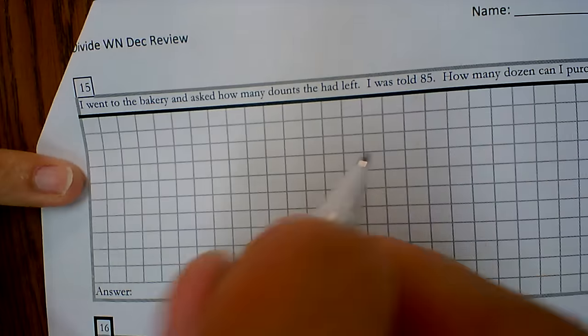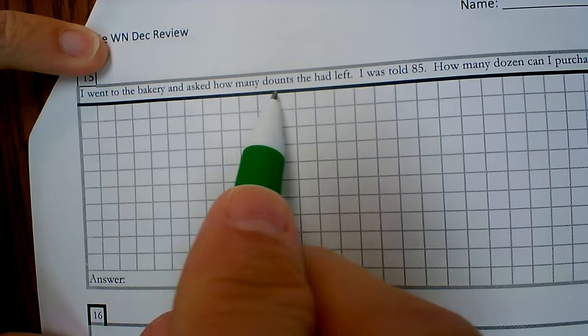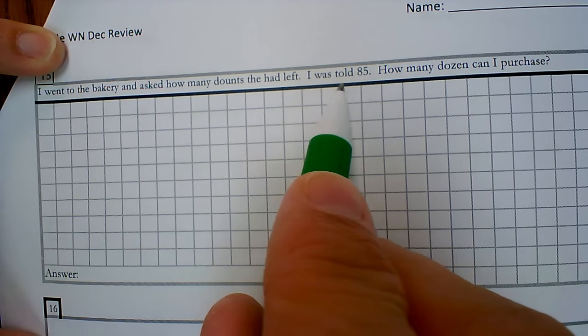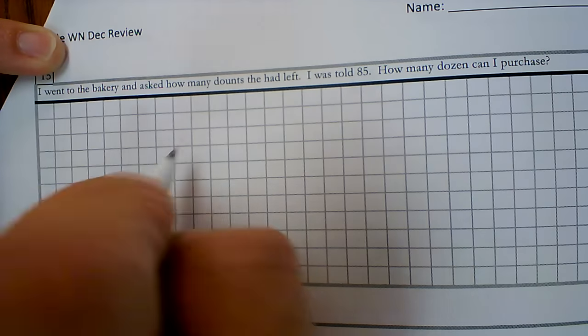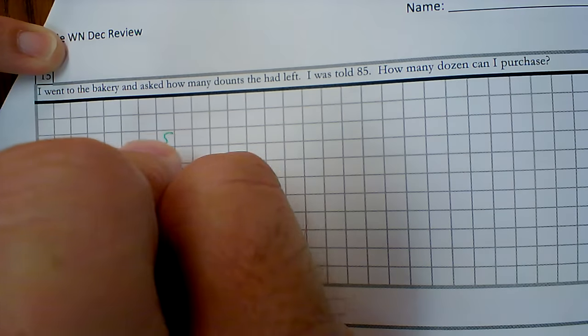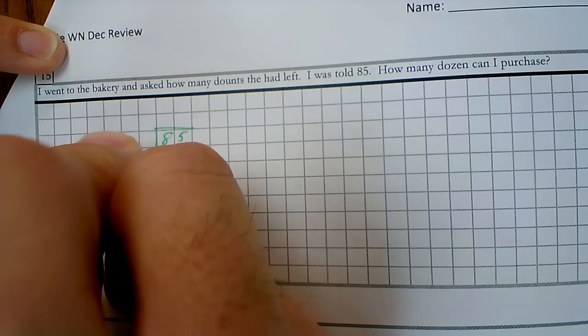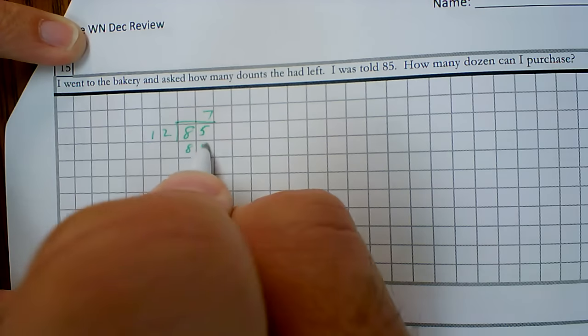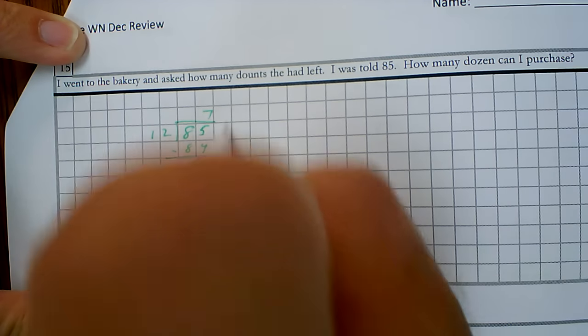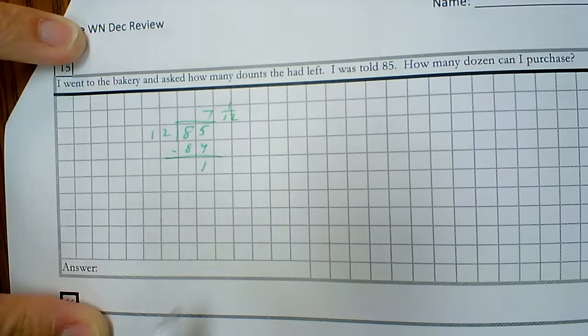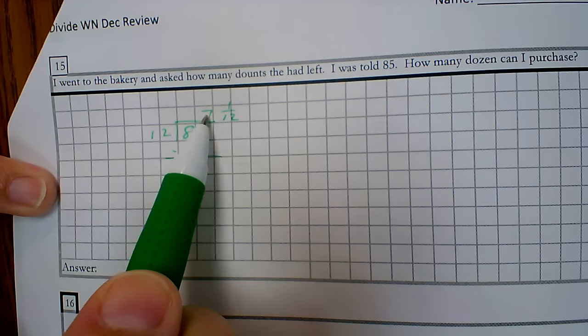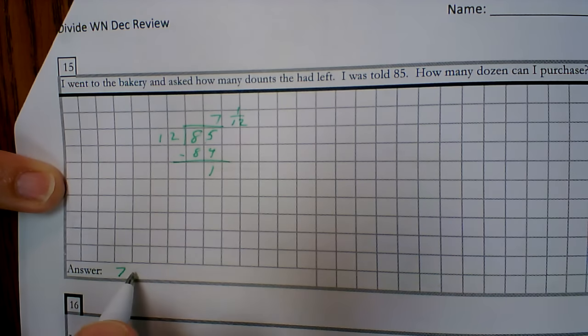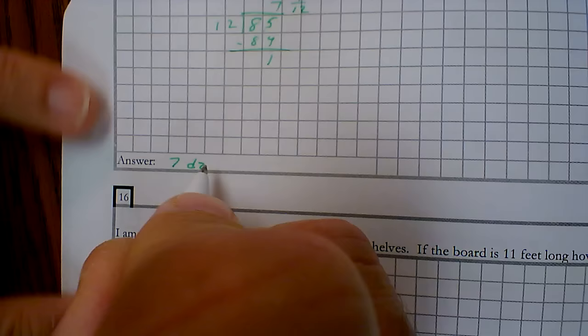Alright. Two more problems. I went to the bakery and asked how many donuts they had left. I was told 85. How many dozen can I purchase? So 85 divided by 12. That's 7, 84, 1 twelfth. So how many dozen can I purchase? Well, I've got 7 full dozen and 1 twelfth of the next dozen. So I can purchase 7 dozen donuts.